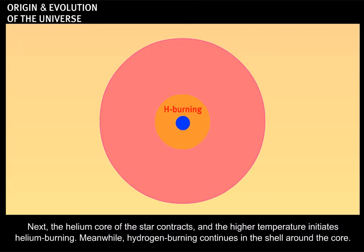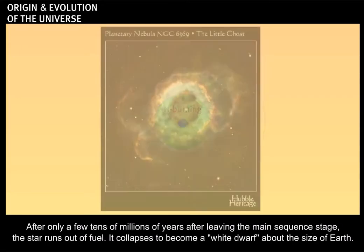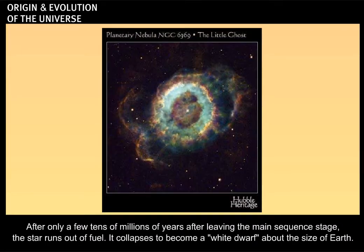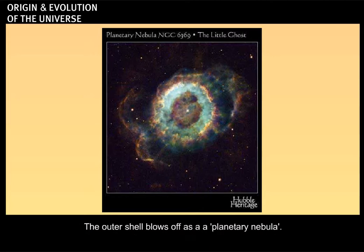Next, the helium core of the star contracts and the higher temperature initiates helium burning. Meanwhile, hydrogen burning continues in the shell around the core. After only a few tens of millions of years after leaving the main sequence stage, the star runs out of fuel. It collapses to become a white dwarf about the size of the Earth. The outer shell blows off as a planetary nebula.